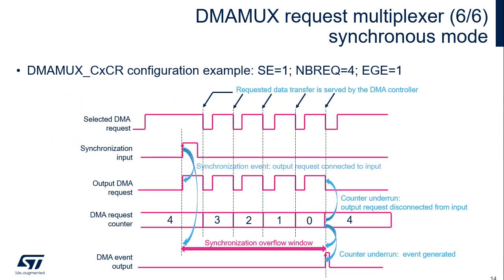When the DMA-MUX channel is configured in Synchronous Mode, its behavior is as follows. The request multiplexer input (DMA request) from the peripheral can be pending, and it will not be forwarded on the DMA-MUX request multiplexer output until the synchronization event is received. Then the request multiplexer connects its input and output, and all the peripheral requests will be forwarded. Each forwarded and granted DMA request decrements the request multiplexer counter set at a defined programmed value. When the counter reaches zero, the connection between the DMA controller and the peripheral is cut, waiting for a new synchronization event. For each underrun of the counter, a request multiplexer can generate an optional event to synchronize and/or trigger a second DMA-MUX request multiplexer channel. The same event can be used in some low-power scenarios to switch the system back to stop mode without CPU intervention.